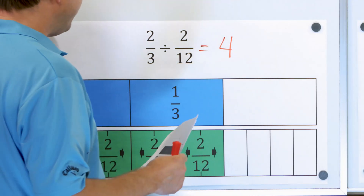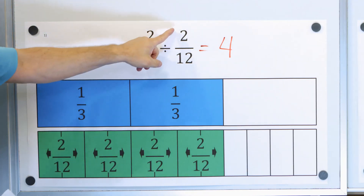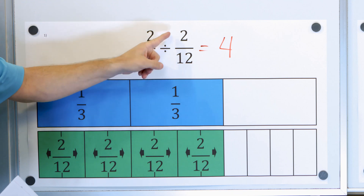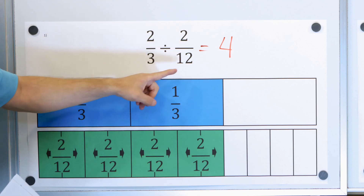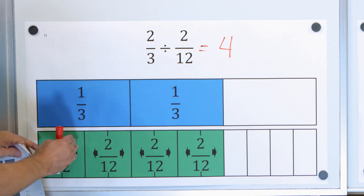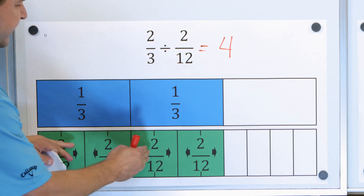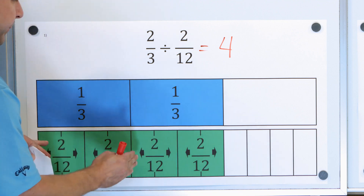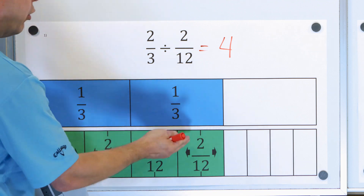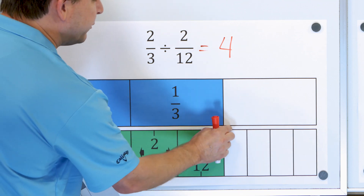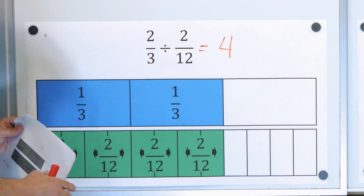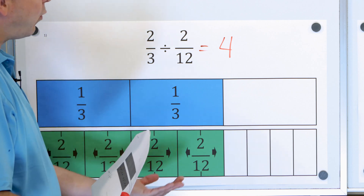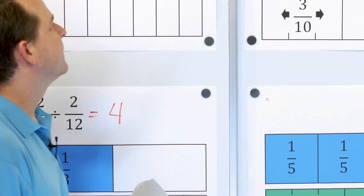But again, if I change two-twelfths to maybe two-elevenths instead, then the size of these will change a little bit and it won't go a whole number of times — there'll be a little bit of extra leftover, so it'll be a fractional answer.